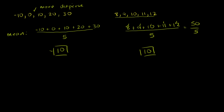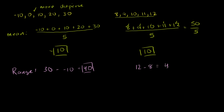So let's think about different ways we can measure dispersion, or how far away we are from the center on average. One simple way is the range, which measures the spread between the largest and smallest number. You take the largest number, which is 30, and subtract the smallest, which is negative 10: 30 minus negative 10 equals 40. So we have a range of 40 for this data set. For the second set, the range is 12 minus 8, which equals 4. So the range tells us this first set is much more dispersed.